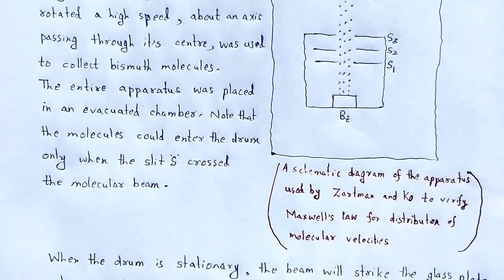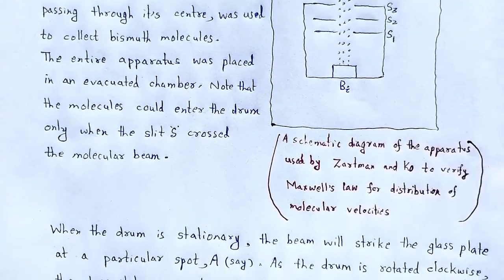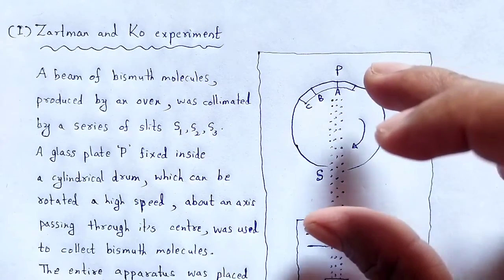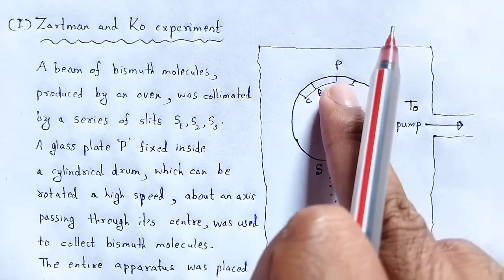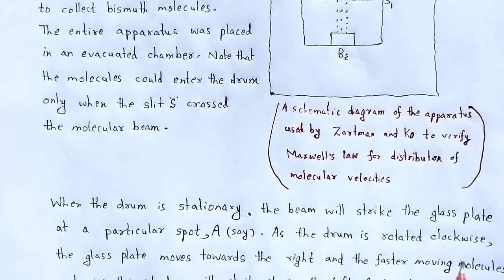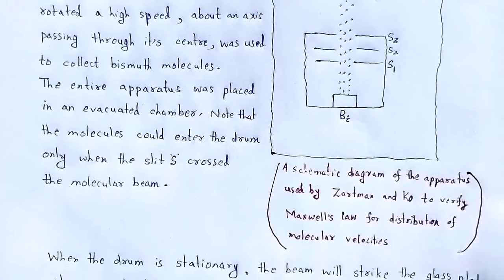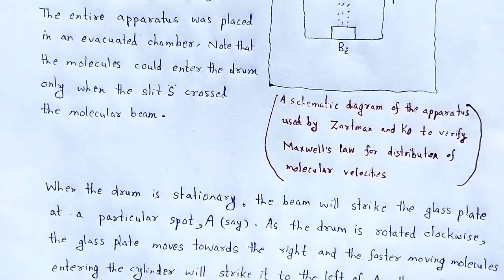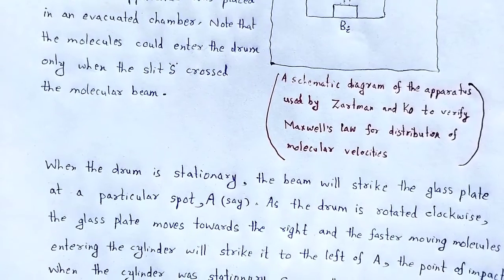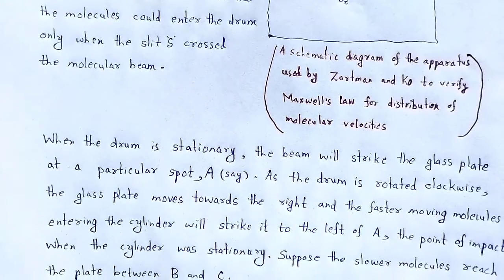Working principle: when the drum is stationary, the beam will strike the glass plate at a particular spot A. As the drum is rotated clockwise, the glass plate moves towards the right and faster moving molecules entering the cylinder will strike it to the left of A — the point of impact when the cylinder was stationary.